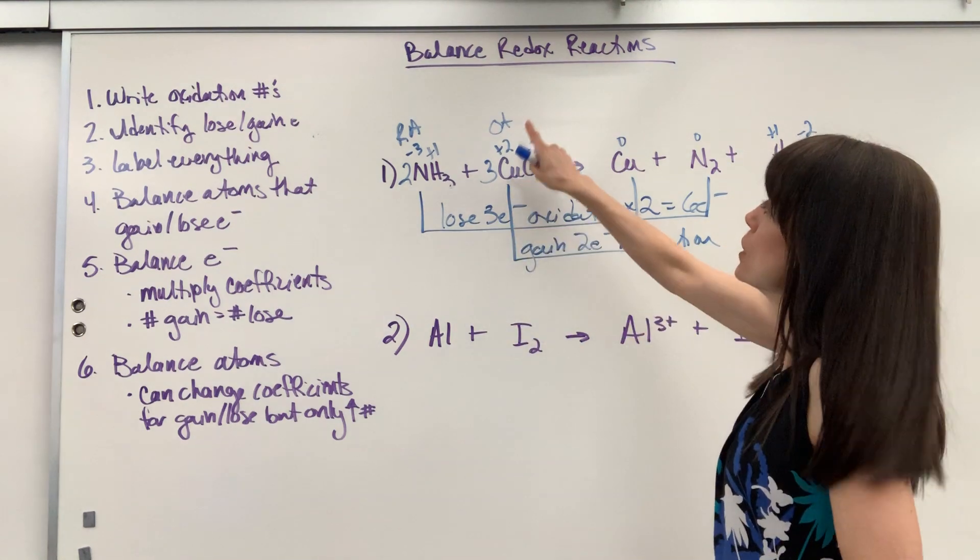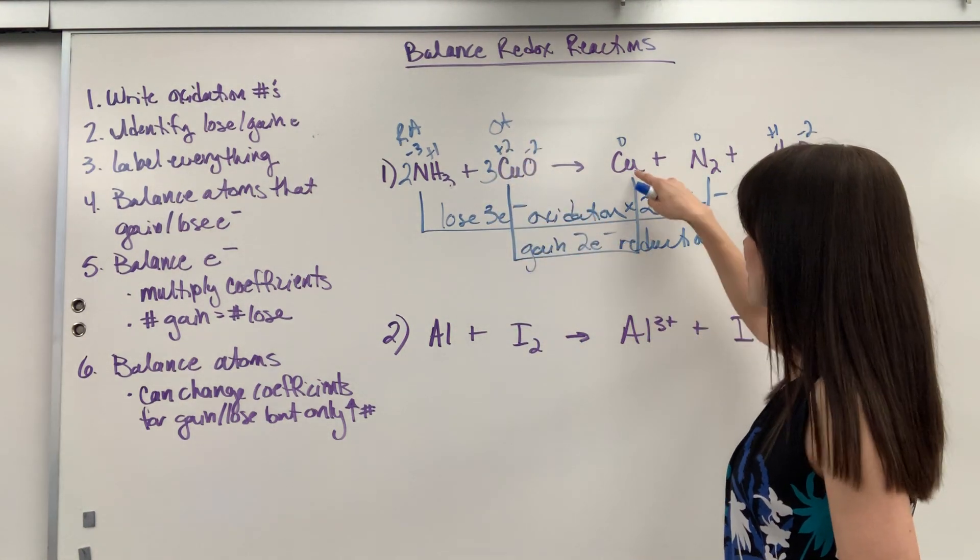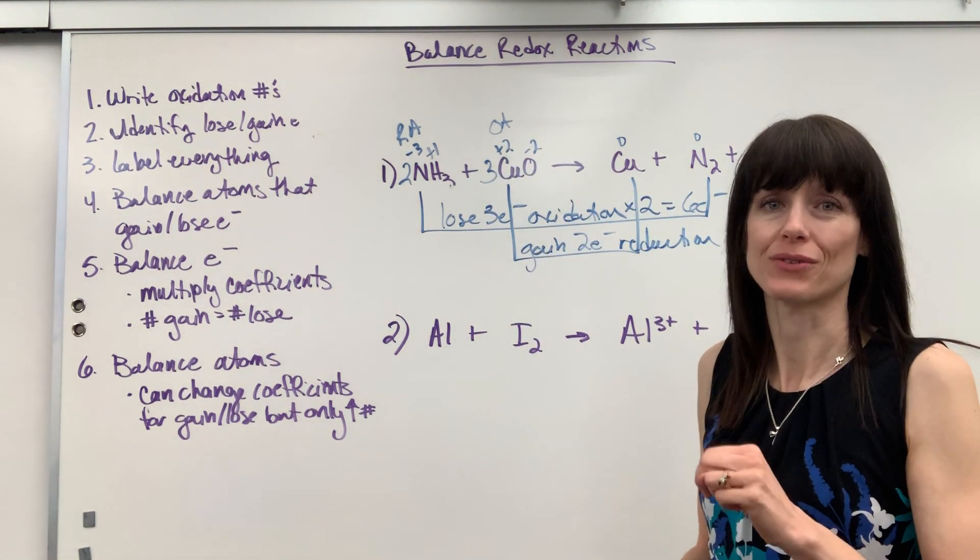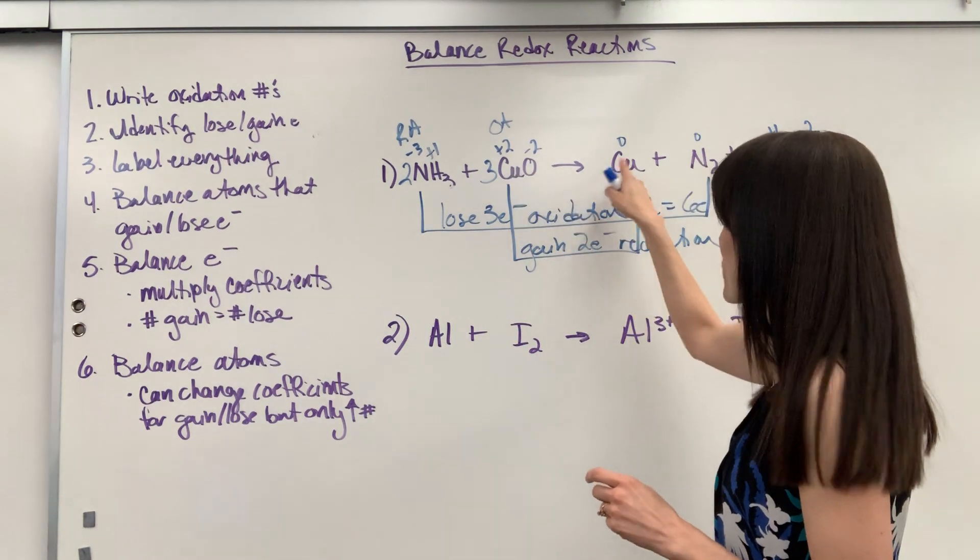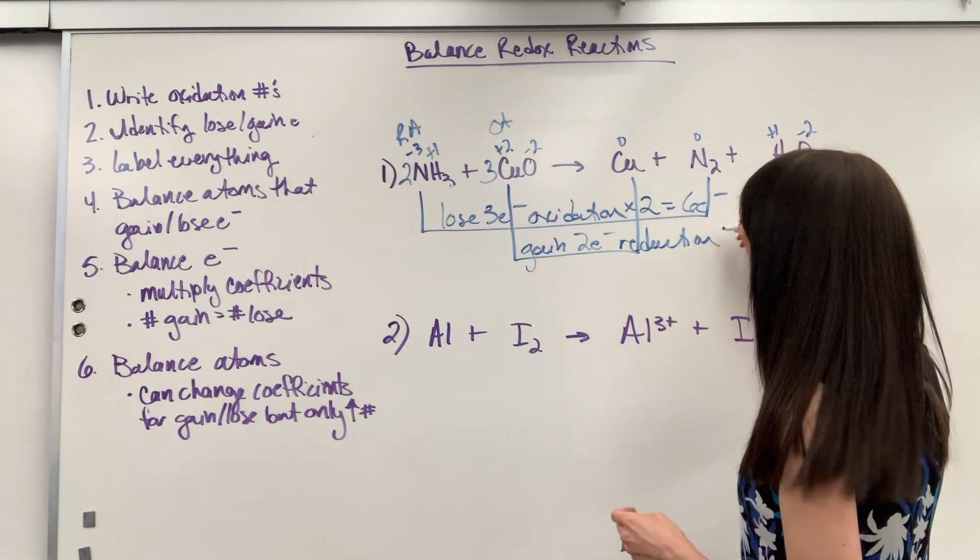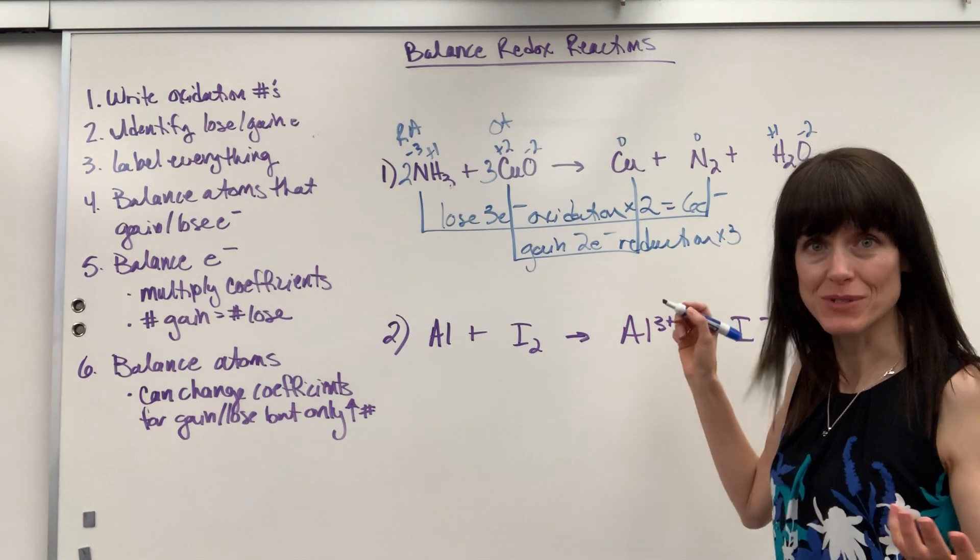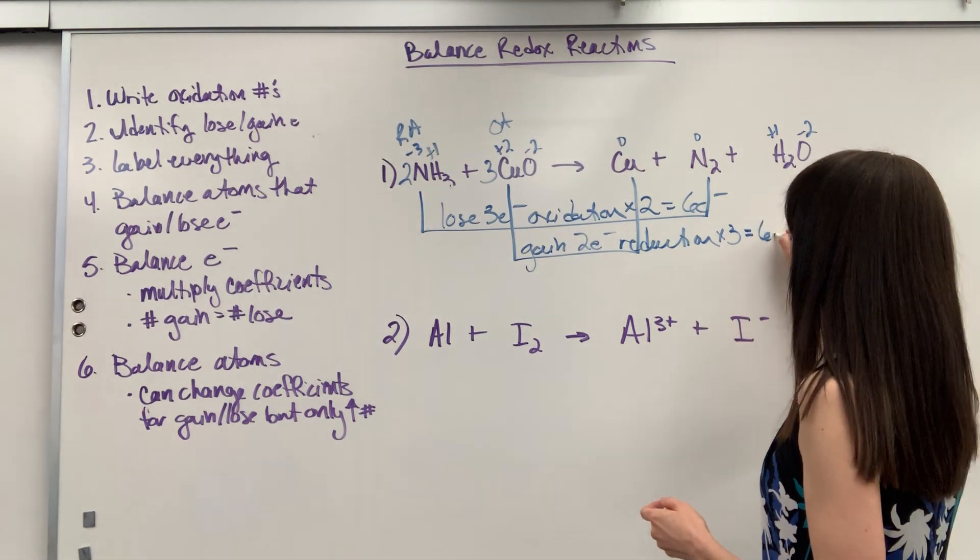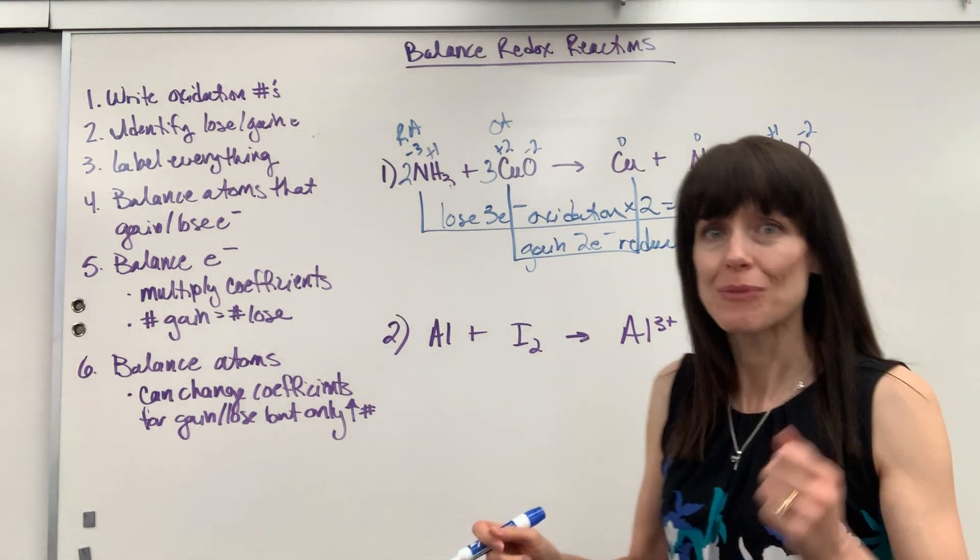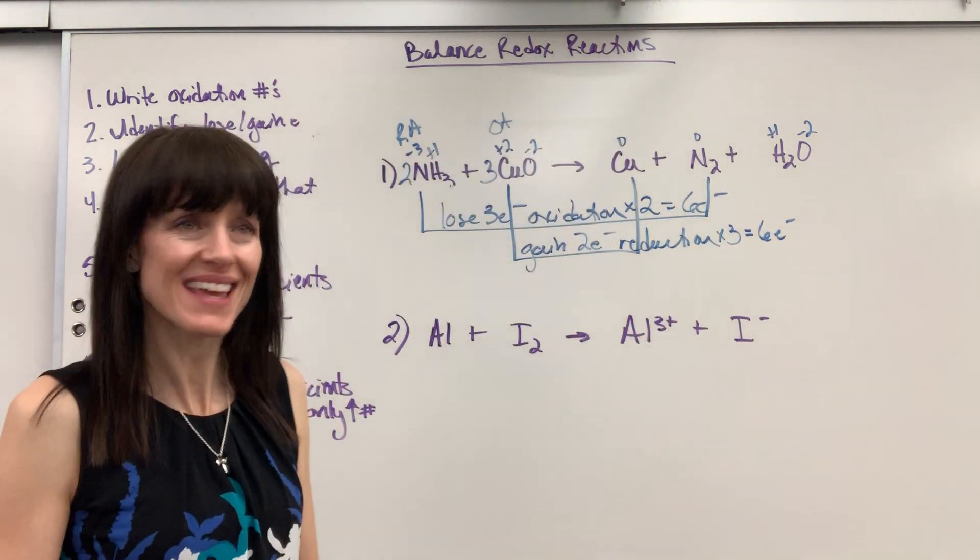So using coefficients, we are going to put a three in front of that copper. Now again, walk this with me. One copper is going to gain two electrons. But now I have three coppers. So multiply that by three atoms, three coppers, and that means six electrons will be gained. We're balanced. Six electrons, six electrons.